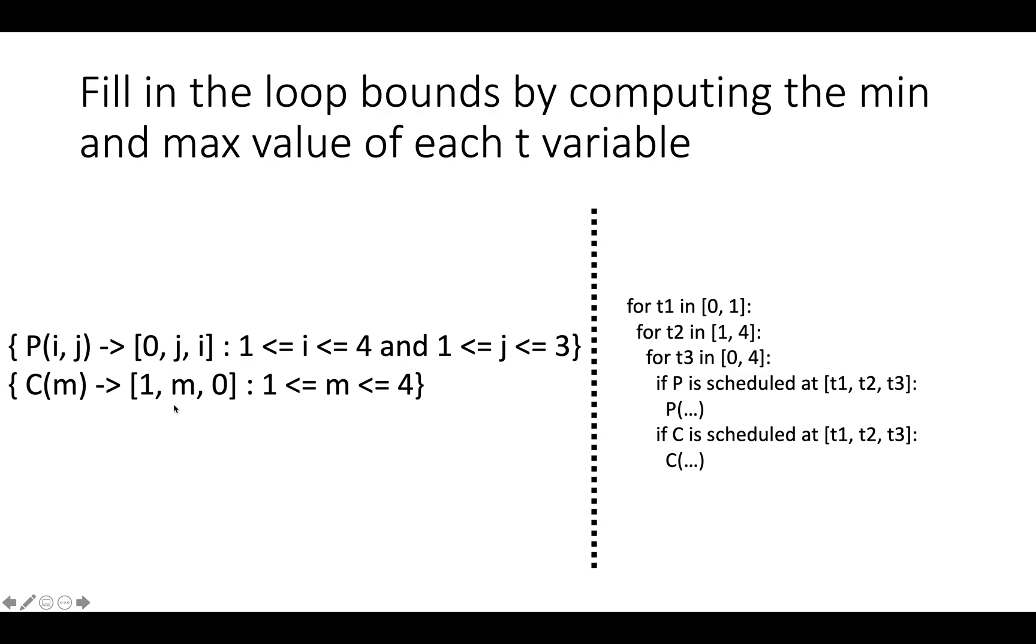For t2, if we just isolate and look at the middle component, P(i,j) is scheduled for time j, for j between one and three. So the min is one and the max is three. But then actually, C(m) is scheduled for time component two, where for every instance of time component two between one and four. So the min is one and the max is four. So we'll say for t2 in one to four.